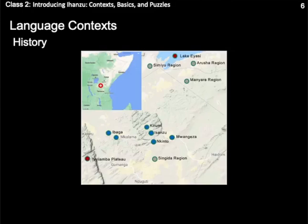Here is a rough map from Google Maps of the current area in which Ihanzu is most commonly spoken, and in which most of the people who identify as Ihanzu live. We can see from the inset that it is spoken in the north-central part of the East African country of Tanzania. Today, all of this area falls within the administrative district of Mkalama, which is itself within the larger administrative region of Singida, labeled here with a gray dot.